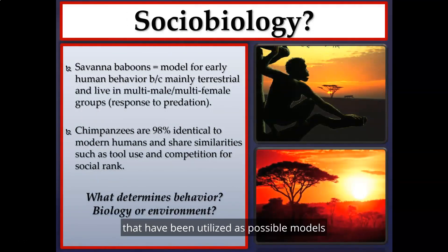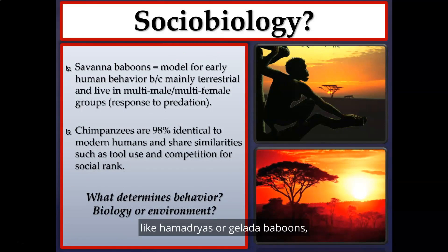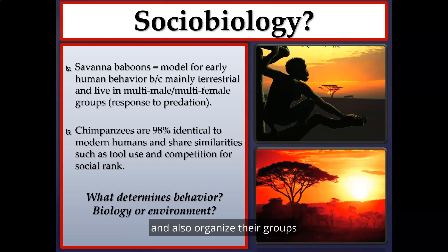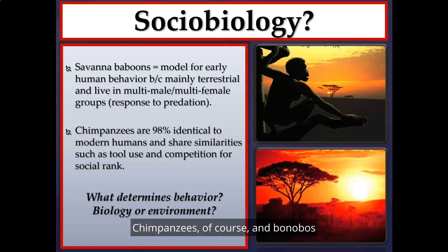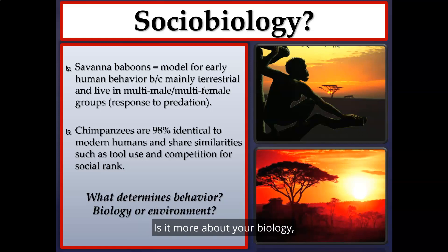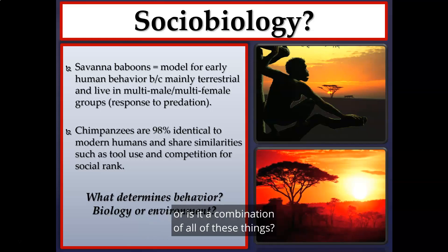Other species utilized as possible models for early human behavior include savannah baboons like Hamadryas or Gelada baboons, mainly because they live in similar habitats and organize their groups similarly to early humans. Chimpanzees and bonobos are 98% identical to modern humans and share other similarities such as tool use and competition for social rank. Sociobiology asks: what determines behavior — biology, social environment, physical environment, or a combination?